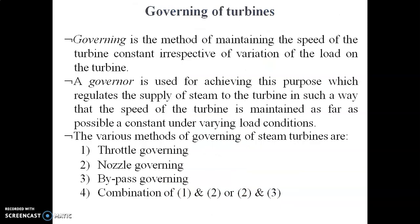Next topic is the governing of steam turbines. The frequency of the electric power output of an AC generator is directly affected by the speed of the turbine, so the frequency must be kept within certain limits for satisfactory operation of electric appliances. This is done with the help of a governor, which maintains the speed of the turbine almost constant irrespective of variation in the load.